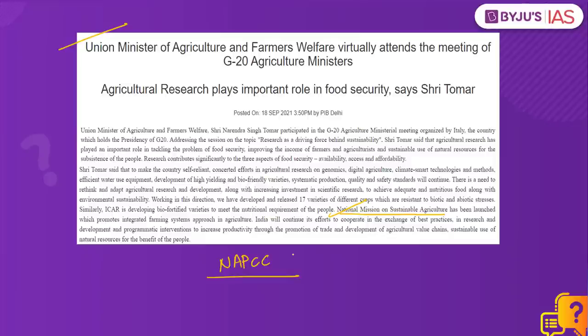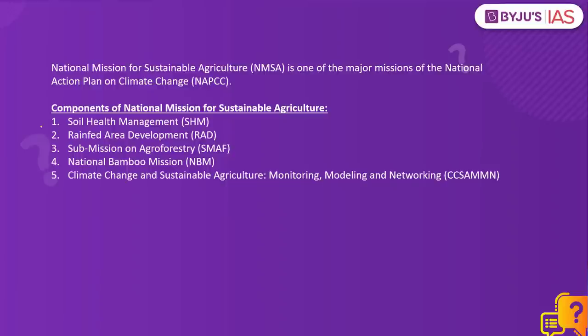What are the components under NMSA? There are five different components under this mission. They include promoting location and crop-specific sustainable soil health management, Rainfed Area Development for development and conservation of natural resources along with farming systems, Submission on Agroforestry, National Bamboo Mission, and the Climate Change and Sustainable Agriculture Monitoring, Modeling and Networking component.